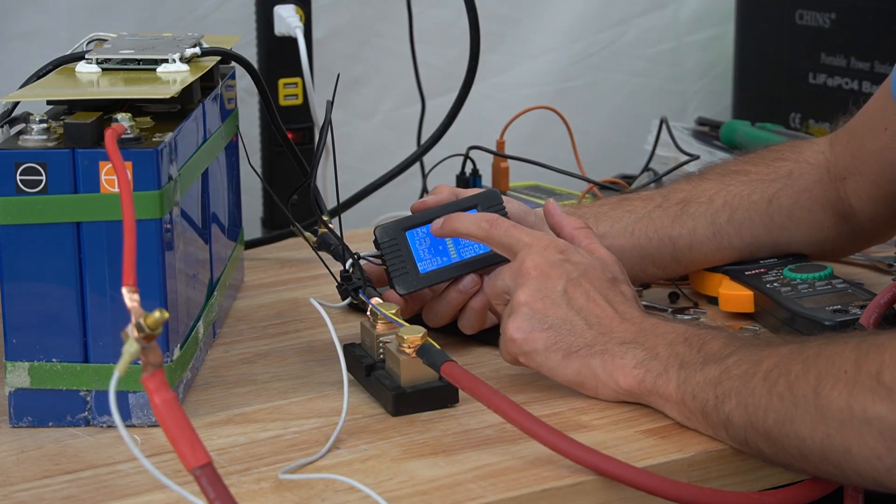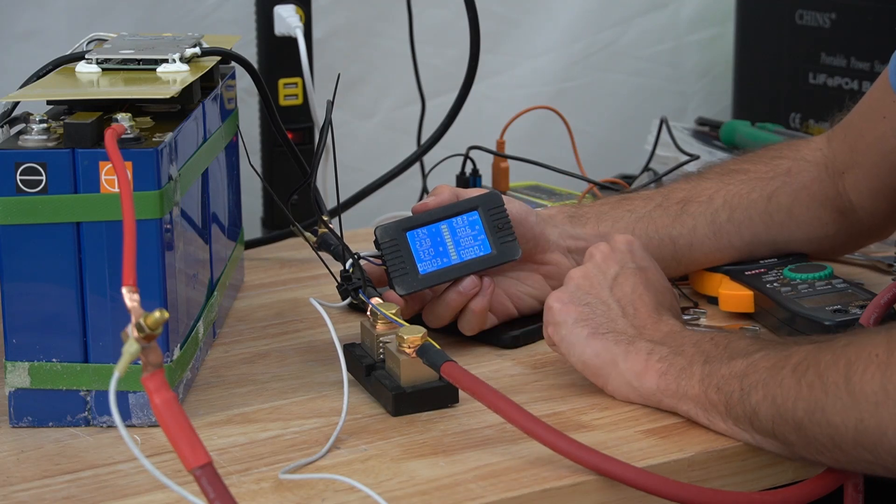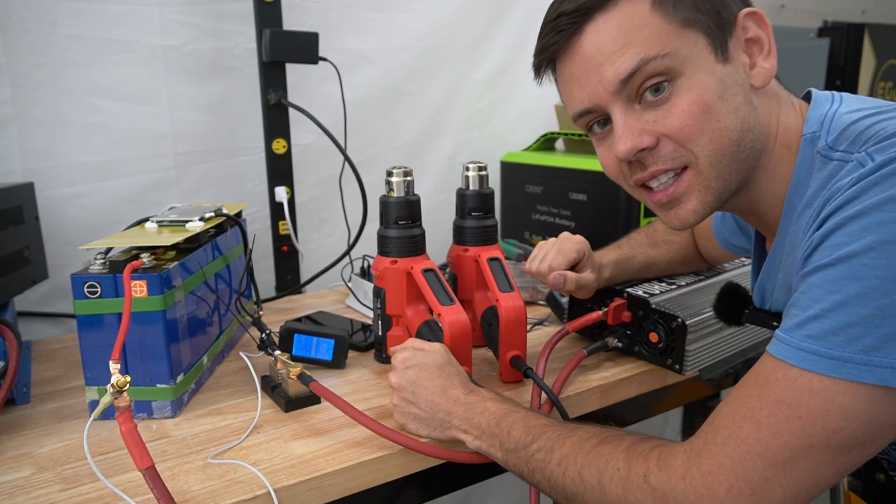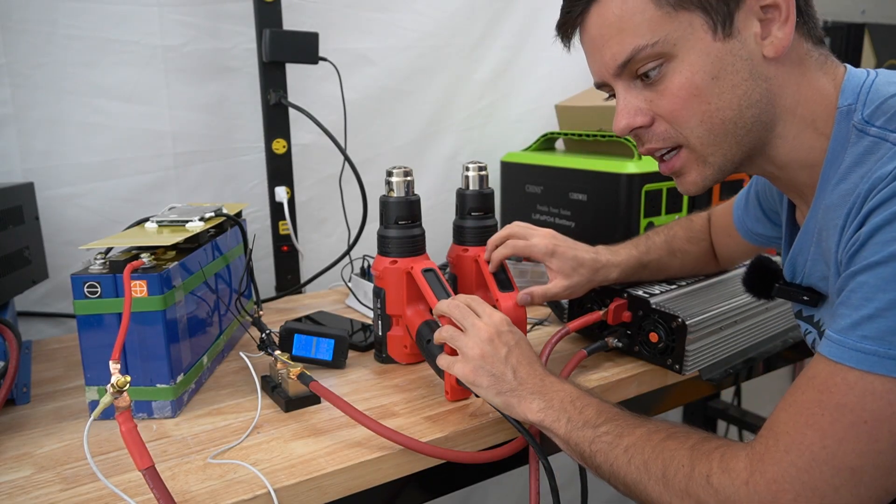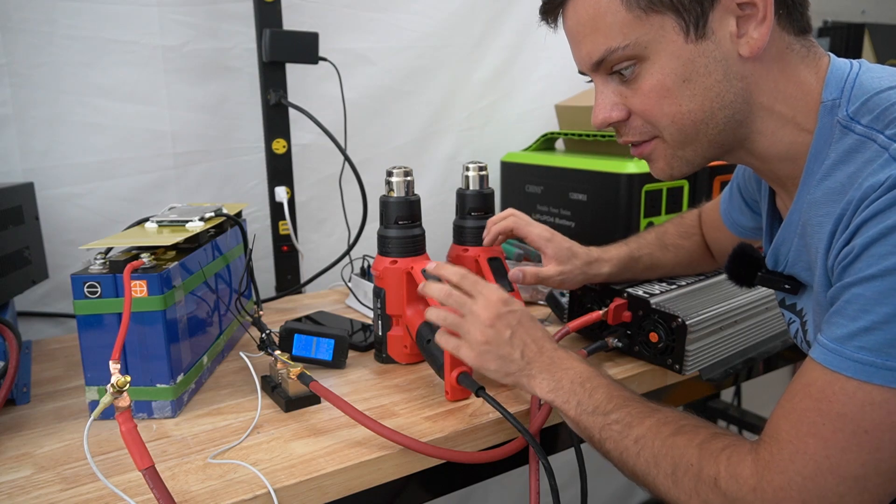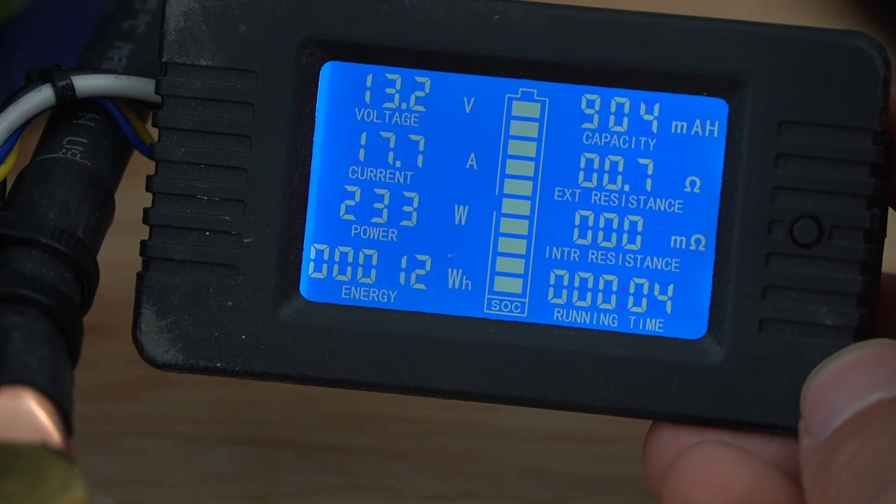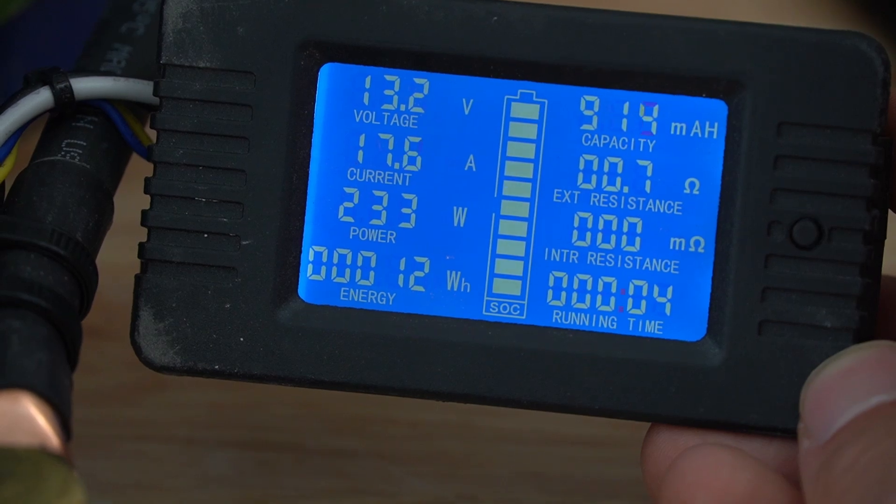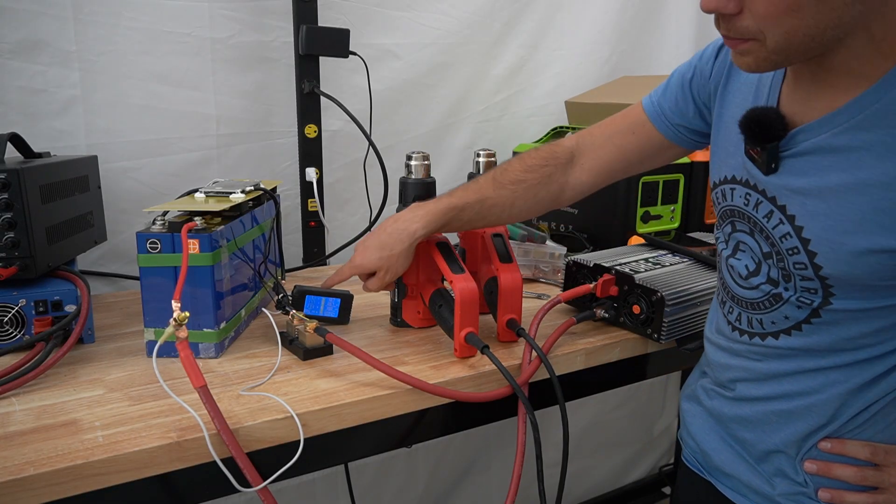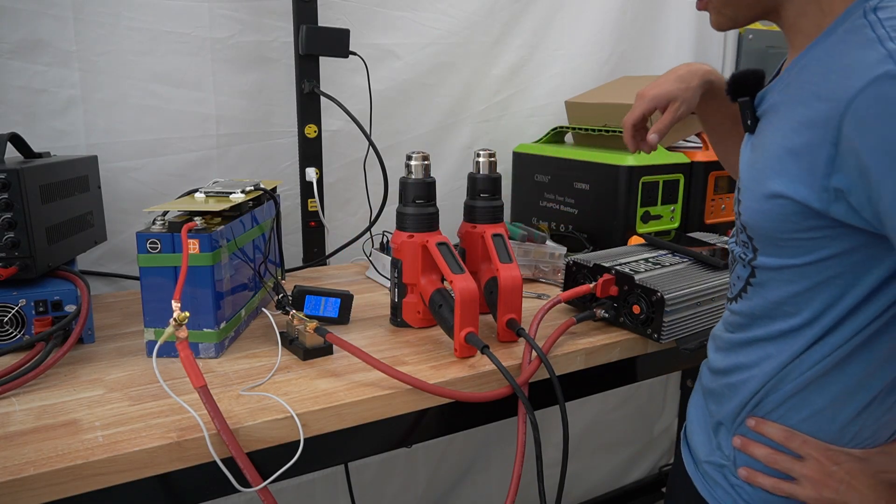Even on the lowest current setting it's pulling 23 amps. So we need to find a different load. So this is the closest I could get with two heat guns with the heat disabled and just the fans running. And that pulls 17.7 amps. So this is as close as I can get it. So now all we have to do is wait. So we'll come back in five hours and we'll have our test results.